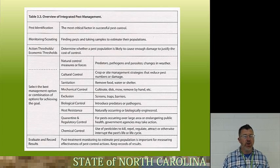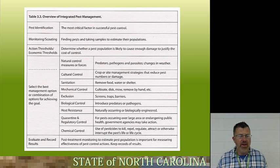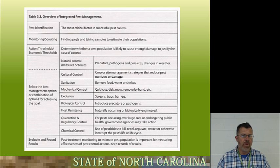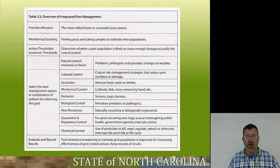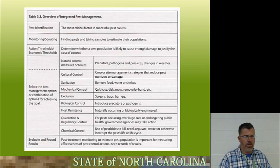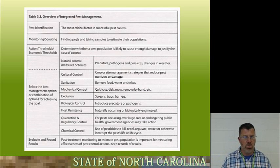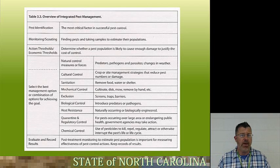Quarantine and Regulatory Control: for pests occurring over large areas or endangering public health, government agencies may take action. It reminds me of the movie Quarantine — about a Los Angeles apartment building where residents came into contact with a rabies-infected animal, and the disease started spreading. The U.S. government quarantined the whole building. If something is going to endanger entire public health, they're going to step in and either quarantine it or implement regulatory control.